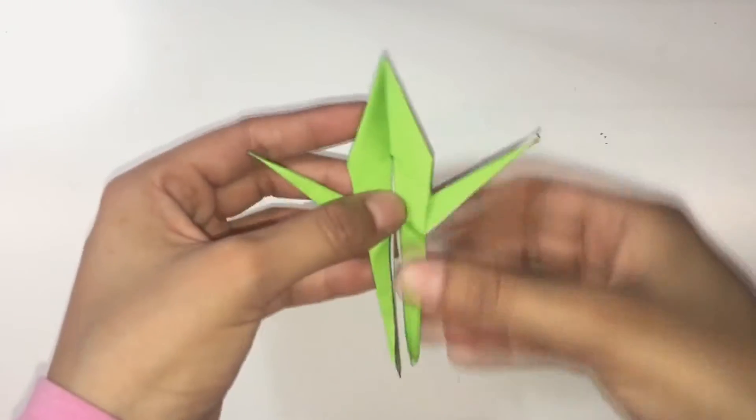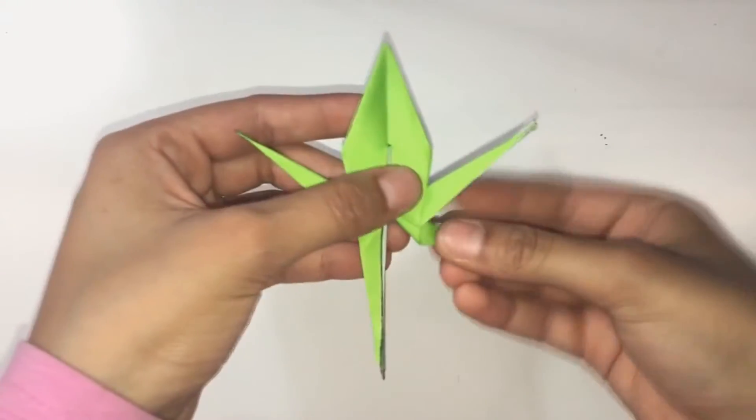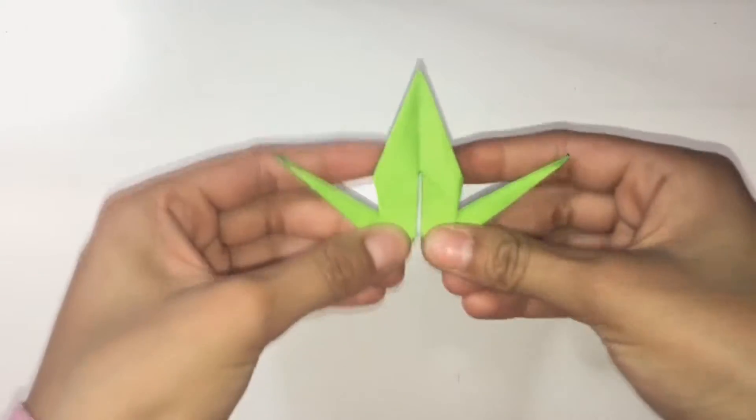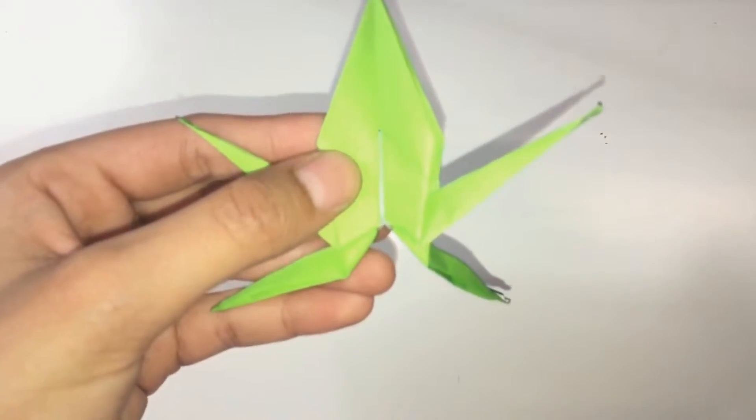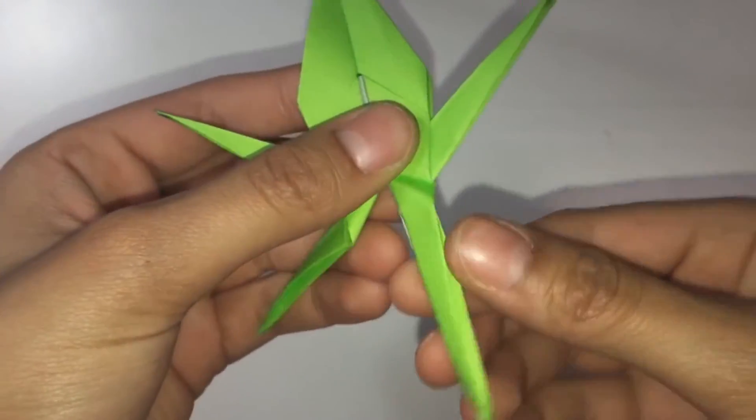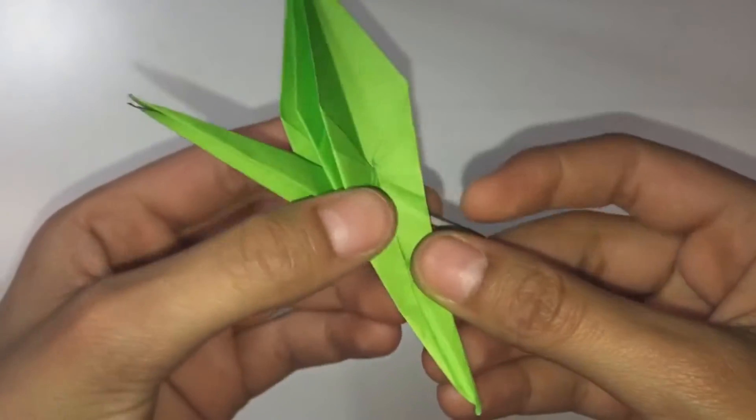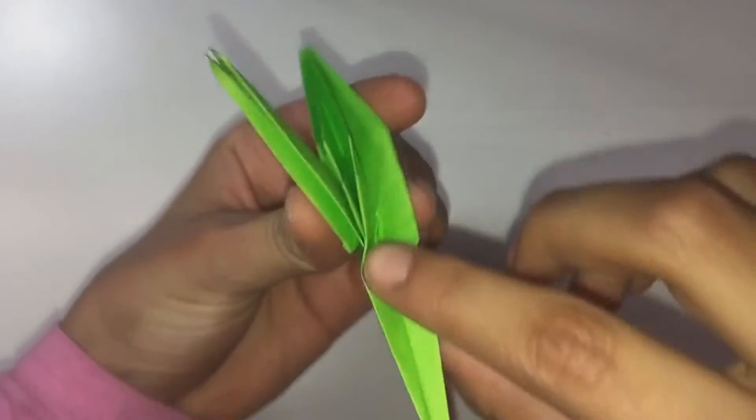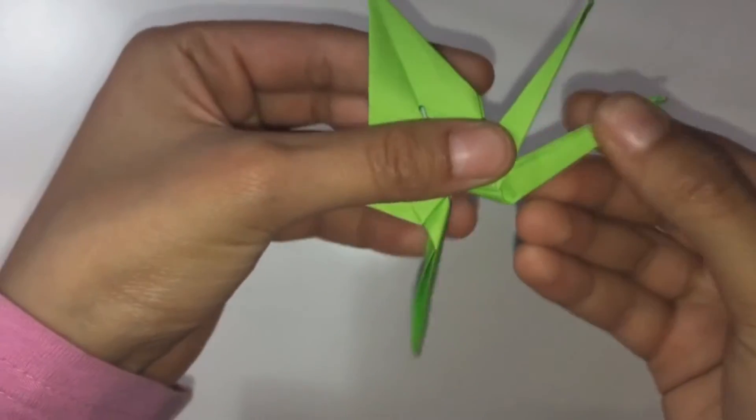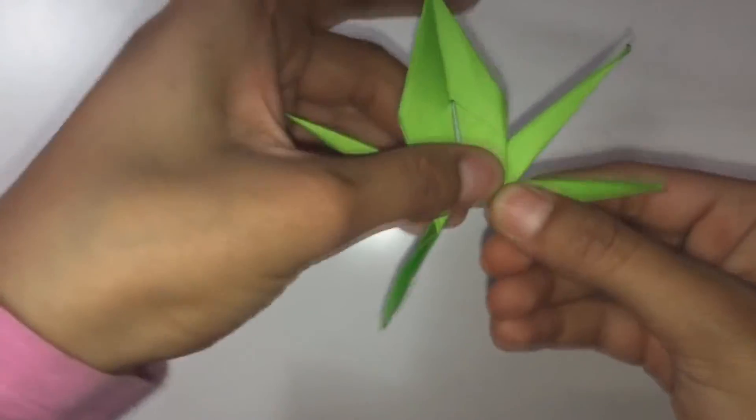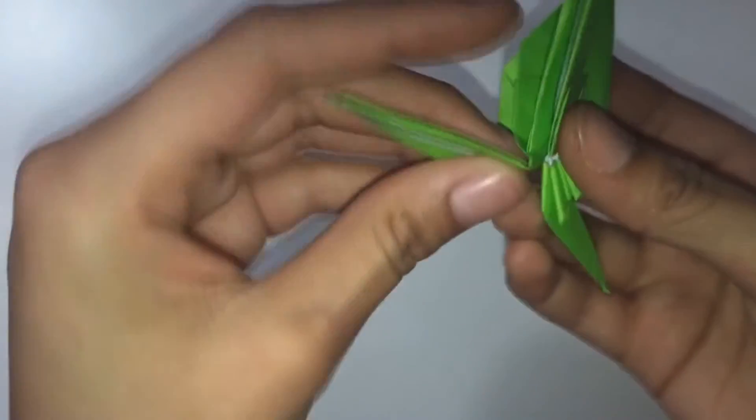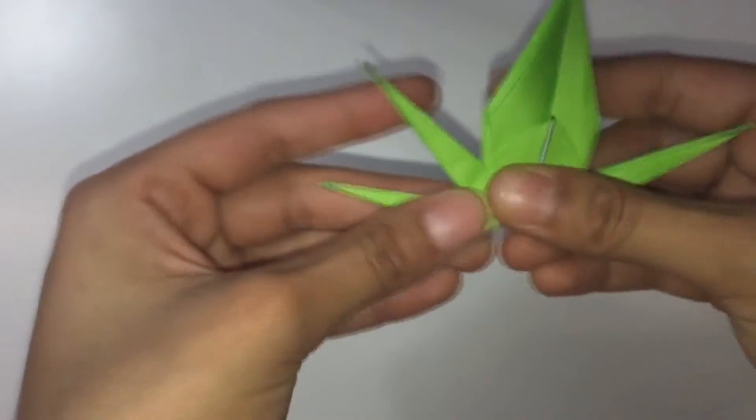For the back legs, you want to fold them directly sideways. Just like this. And we will also inside reverse fold these. So again, to inside reverse fold, just open it up in half and then fold along the two diagonal lines and just push them in. Same with the other side. Unfold, fold along the diagonals, and push them in.